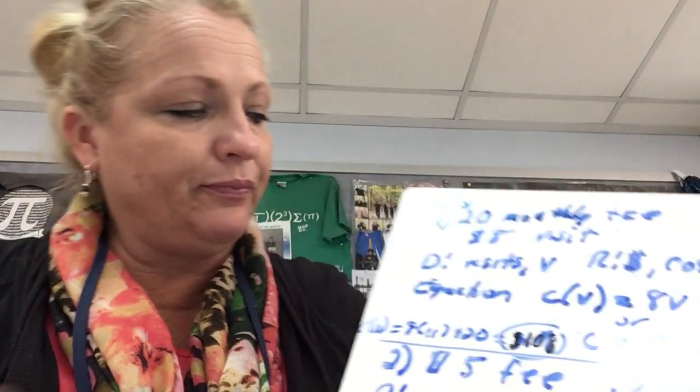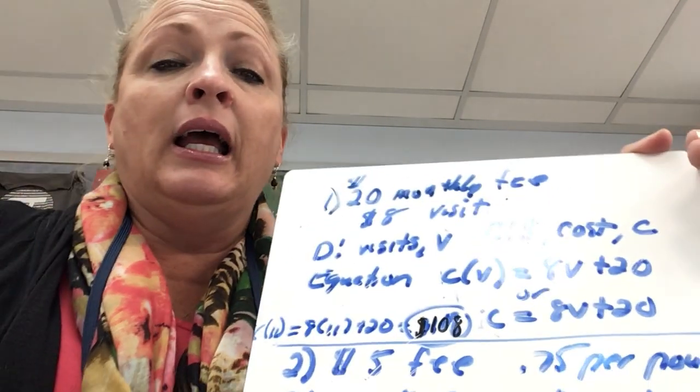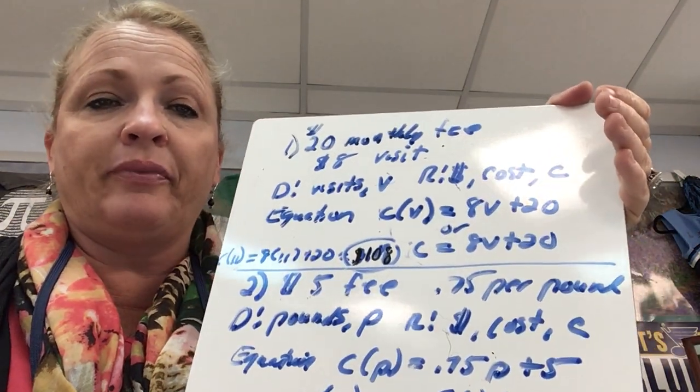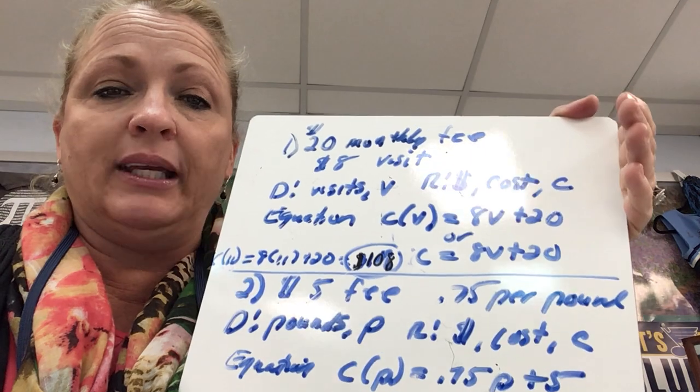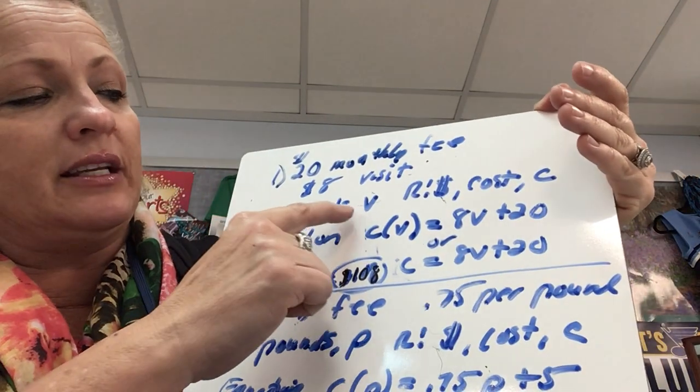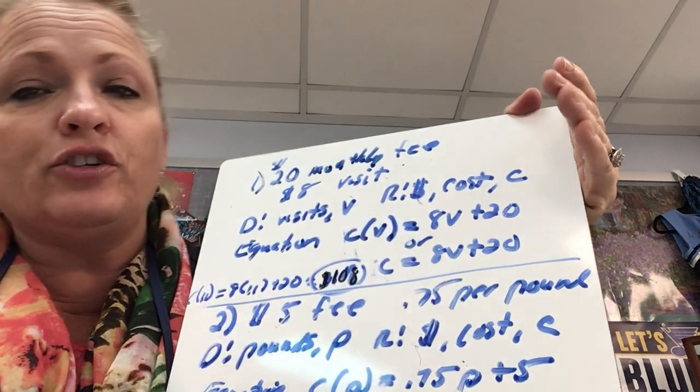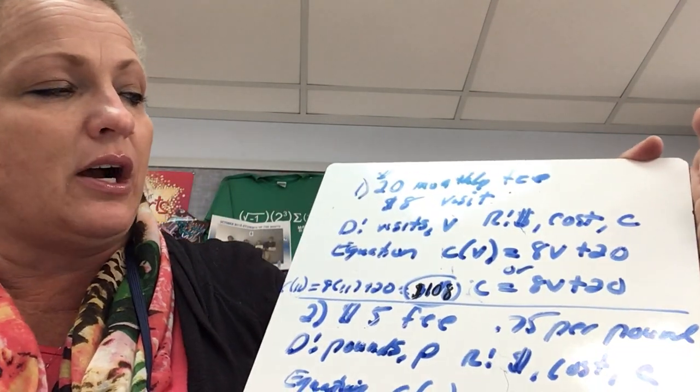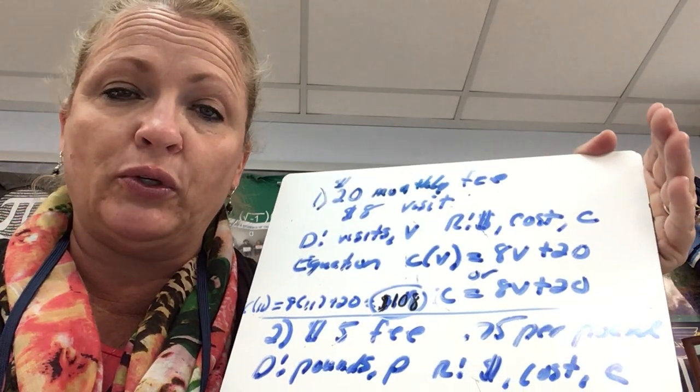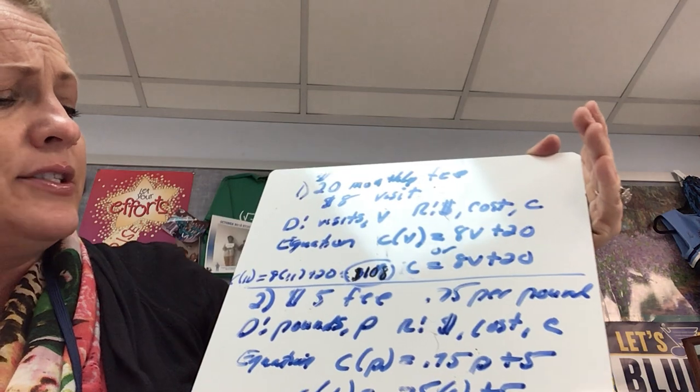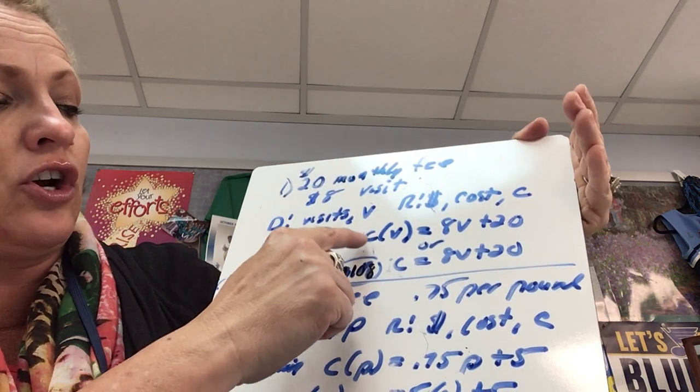So what is going to be my domain, what's going to be my range? My domain is going to be how many visits that are made monthly. My range is going to be the cost. My independent variable is the number of visits, my range, my dependent variable is the cost. It depends upon the number of visits. It doesn't matter what variables you use, I just make the variables that go with the words.